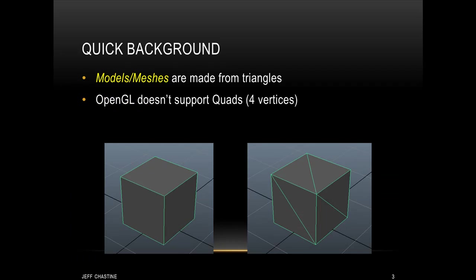Working at an even higher level, we have the concept of models, sometimes also called meshes. Almost all of the meshes that you see in computer games and graphical applications are usually made up of a series of triangles. One thing to keep in mind if you come from a modeling background and you've been using applications like Maya or 3D Studio Max: realize that OpenGL doesn't support quads. In other words, it doesn't support things with four or more vertices.